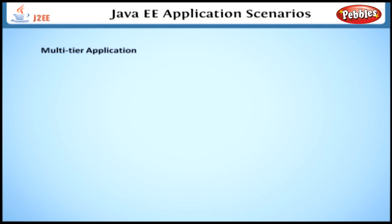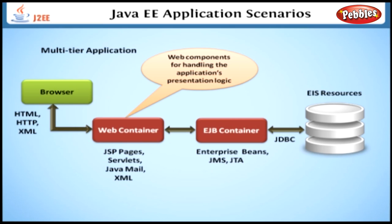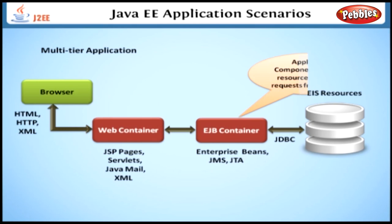As we have seen earlier in the architecture, a multi-tier application has multiple tiers based on the application. In this scenario, the browser uses HTML, HTTP, and XML to communicate with the web container. The web container has many web components dedicated to handling the application's presentation and its logic. It uses servlets, JSP pages, and XML to generate dynamic content, and also uses Java Mail. The EJB container contains application components that use EIS resources to service requests from the web tier.